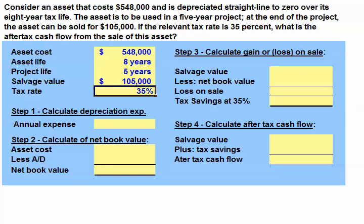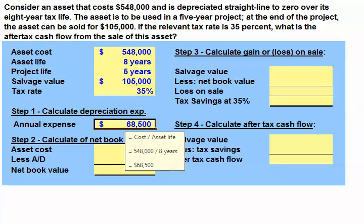The first step is to calculate the annual depreciation expense for our asset. To calculate the annual depreciation expense, we'll take our asset cost of $548,000 and divide it by the eight-year tax life. We get an annual depreciation expense of $68,500.